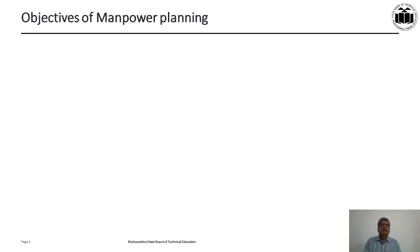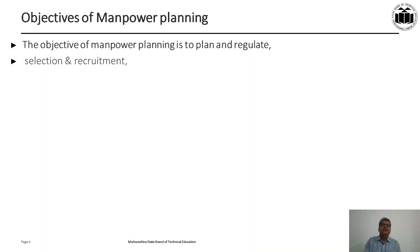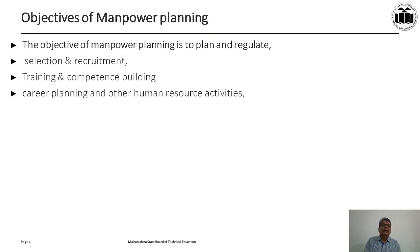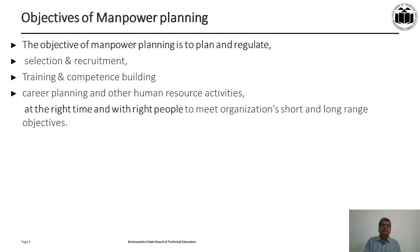Let us understand objectives of manpower planning. The objective of manpower planning is to plan and regulate — essentially for planning and regulating selection and recruitment, training and competence building, career planning and other human resource activities. All this is to be done at the right time and with the right people to meet the organization's short-term and long-range objectives.